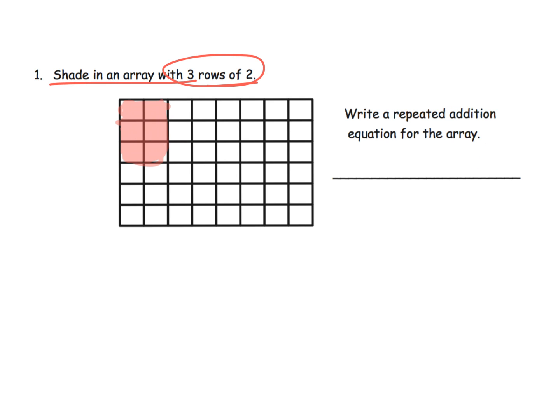Now the question also says write a repeated addition for that array. With this given array, there's two different repeated additions that students could give. The primary one that Eureka Math is pushing our students towards, given that this is three rows of two, they want us to write two plus two plus two equaling six. You've got a row of two, a row of two, and a row of two—three rows of two.